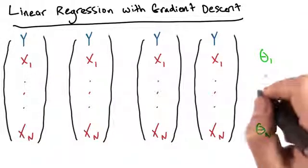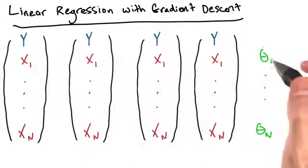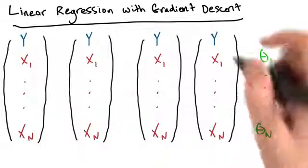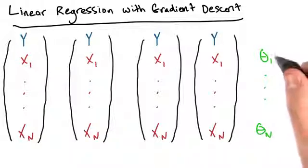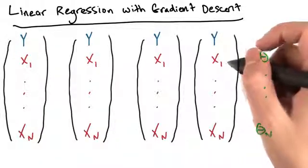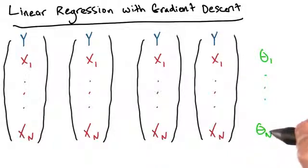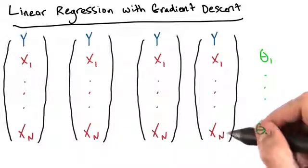Each theta, which from here on out we'll call the parameters or weights of our model, tell us how important an input variable is when predicting a value for the output variable. So if theta 1 is really small, then x1 is not very important in predicting y. Whereas if theta n is very big, then xn is a big contributor to the value of y.